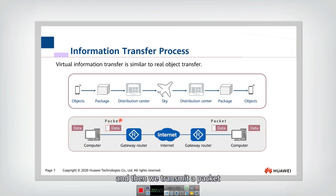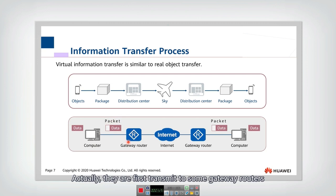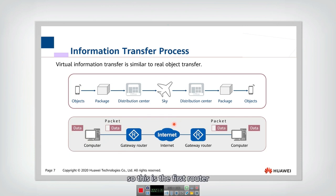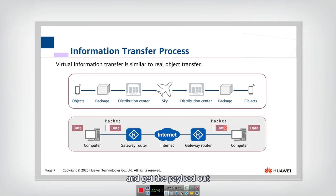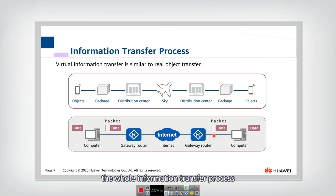We then transmit a unit called a packet. The packet is first transmitted to a gateway router — the gateway being the router that connects the computer to the internet. The packet travels through the internet to another gateway router, where it is decapsulated: the header and tail are removed to retrieve the payload. Finally, the payload is received correctly, completing the whole information transfer process.